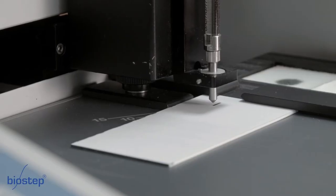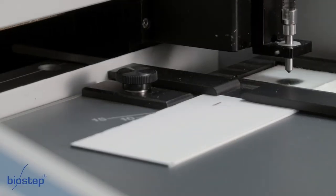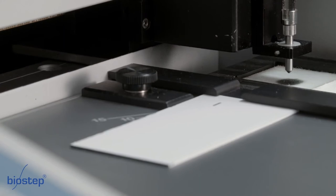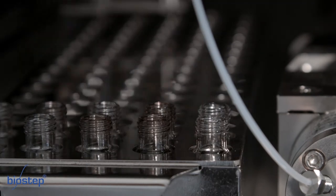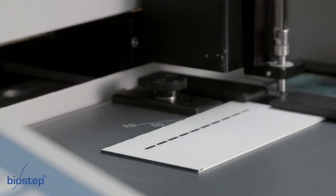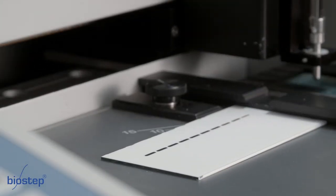A flushing step after the first sample will eject the rest of the sample before a new sample is drawn in. After all samples are applied, the TLC plate will be automatically loosened from the fixing and separation can take place.